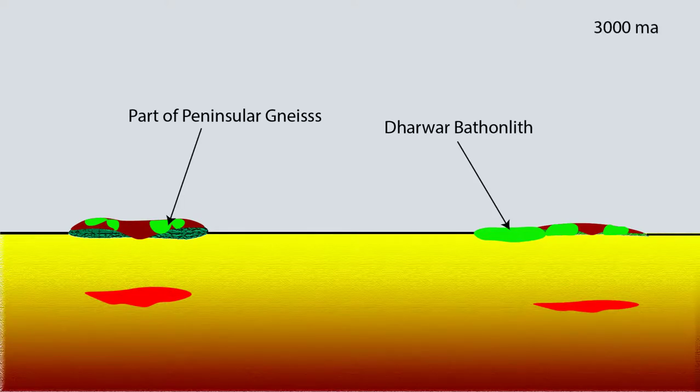Granitoids, which belong to Peninsular Gneiss, intruded at 3000 million years ago into the Western Dharwar Craton. Peninsular Gneiss formed basement to Dharwar Supergroup. Some TTG plutons also intruded in Eastern Dharwar Craton to form Archean Dharwar Batholith.